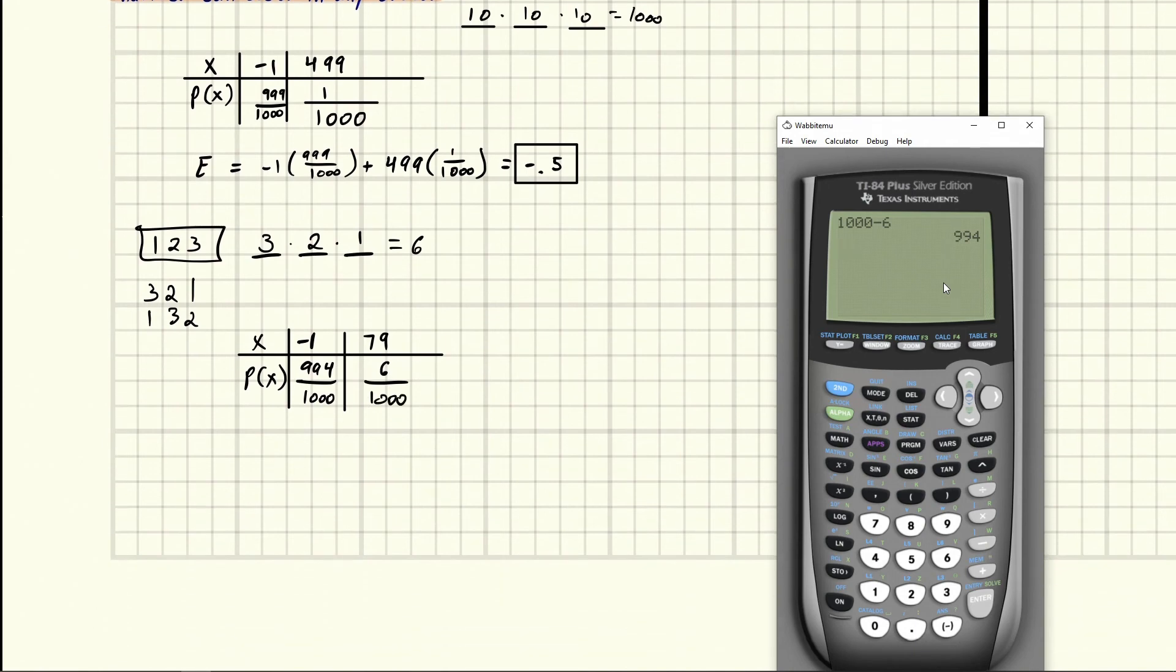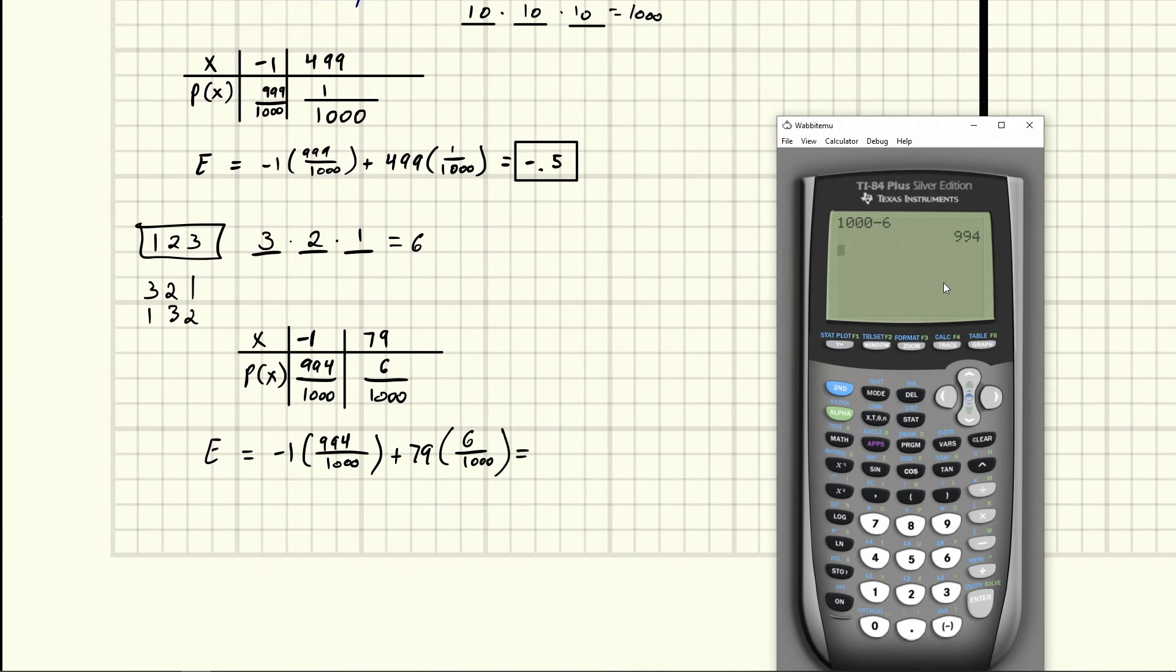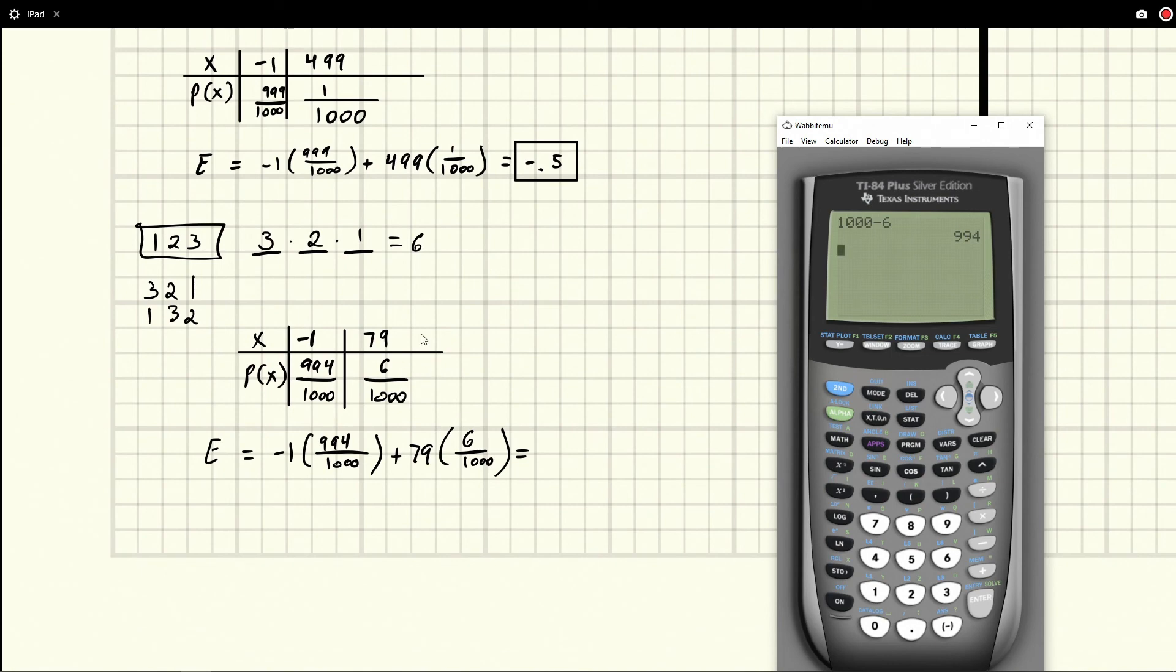So if you find its expected value, we're going to get negative one times 994 over 1000 plus 79 times six over 1000, right, we're just using the formula for the mean. What is this now? Is it going to be better or worse than up here? Because keep in mind, this one, we have a lower win value, more ways to win, but a lower win value.